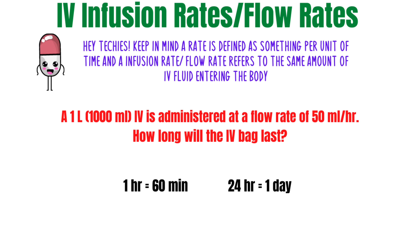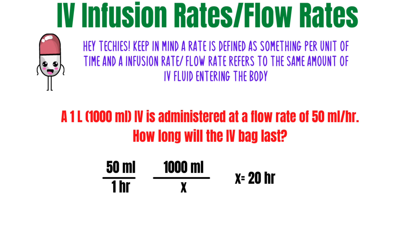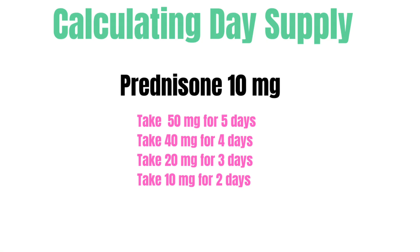Now let's talk about IV infusion rates and flow rates. For example: a 1-liter IV is administered at a flow rate of 50 mL per hour — how long will the IV bag last? Keep in mind 1 liter equals 1000 mL. Set up the proportion: 50 mL over 1 hour equals 1000 mL over x. Cross-multiplying gives 20 hours.